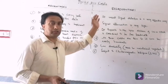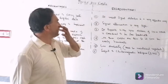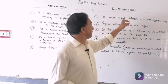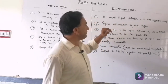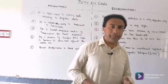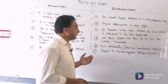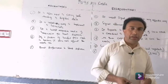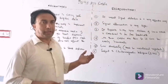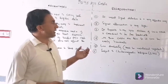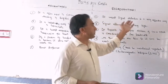Now we will discuss the disadvantages of the twisted pair cable. The first disadvantage is signal distortion. Distortion means the signal gets degraded. The signal will be distorted in the twisted pair cable because there is electromagnetic interference in such type of cables, which causes the signal to be distorted.